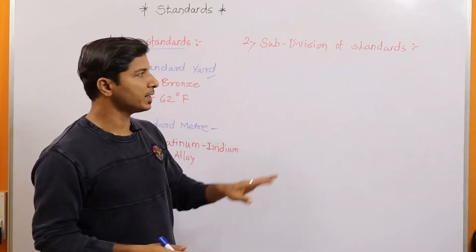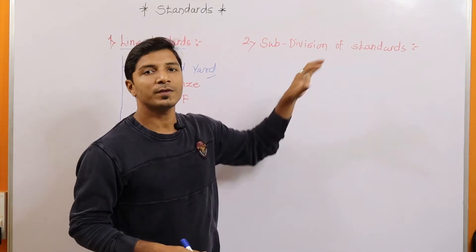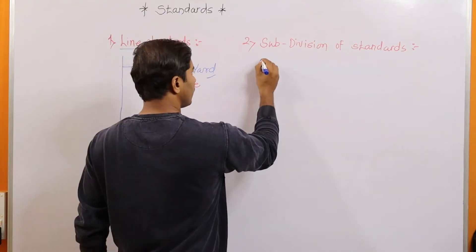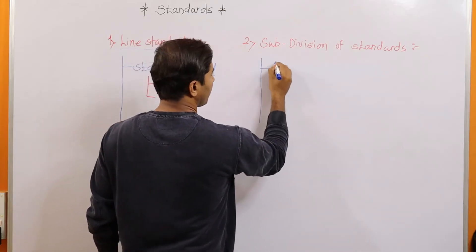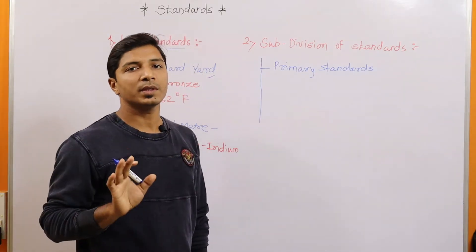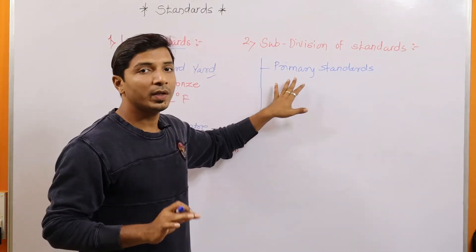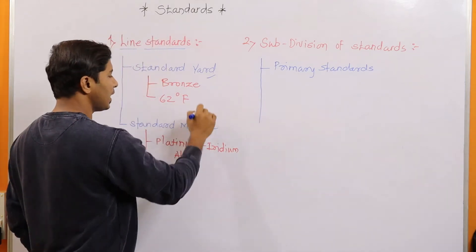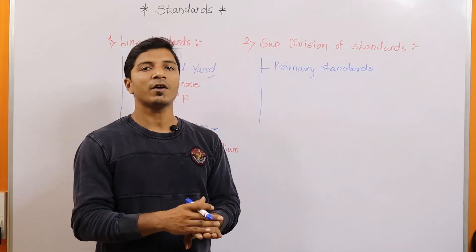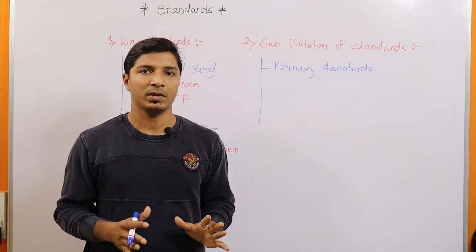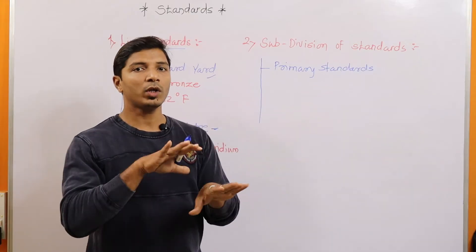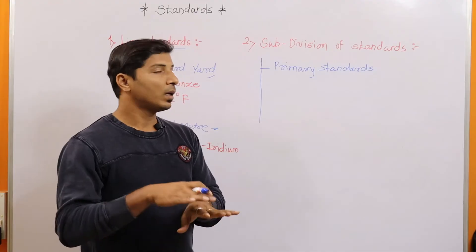The next category is the subdivision of standards. According to the importance of standards, they can be divided into subtypes. The first is primary standards. These standards are not for ordinary purposes and are preserved in the most careful conditions. The standard yard and meter we discussed belong to primary standards. These standards are used only after 10 to 20 years, for comparison with secondary standards, to maintain the accuracy of those secondary standards.